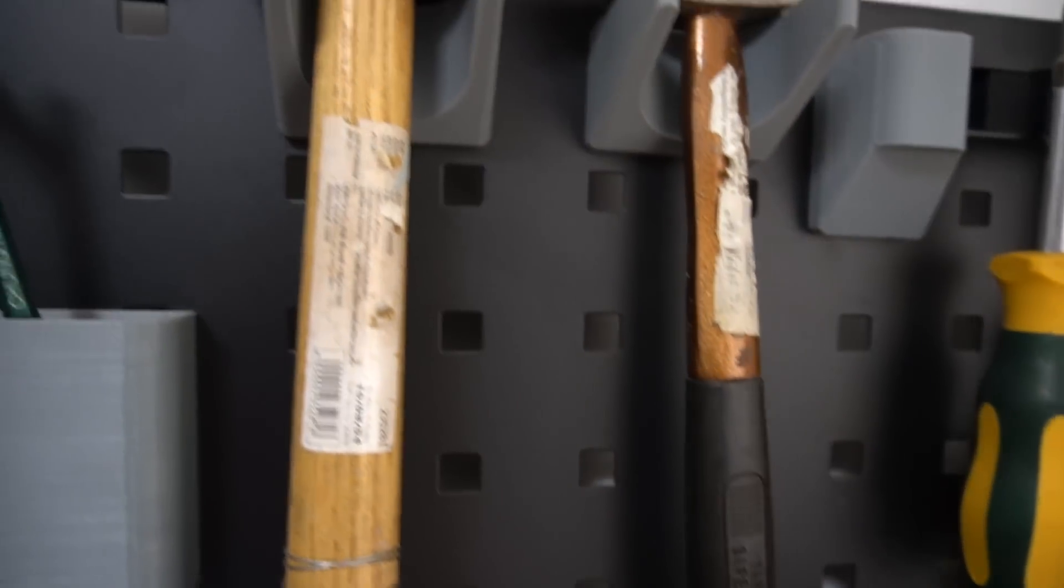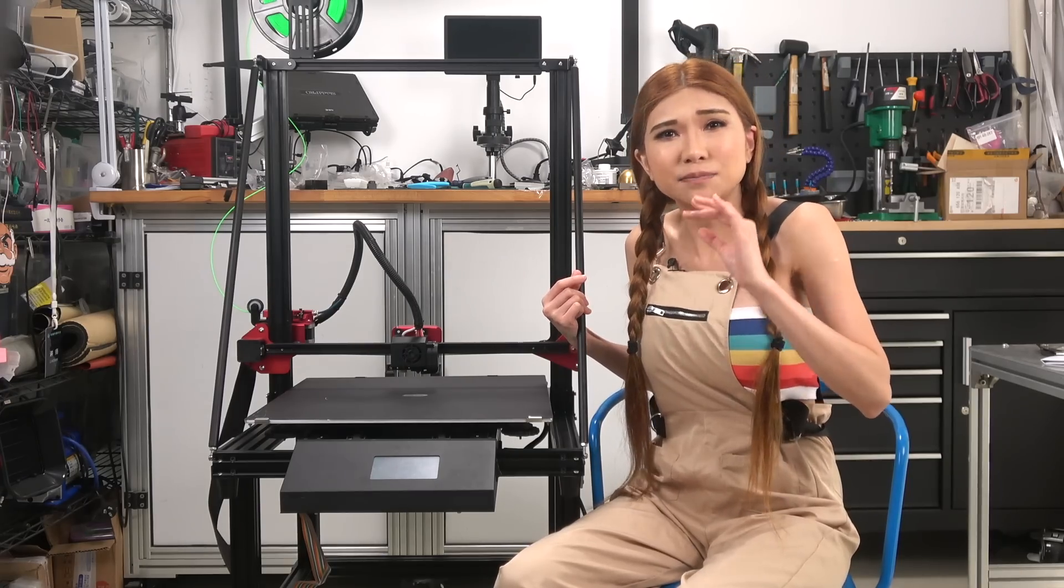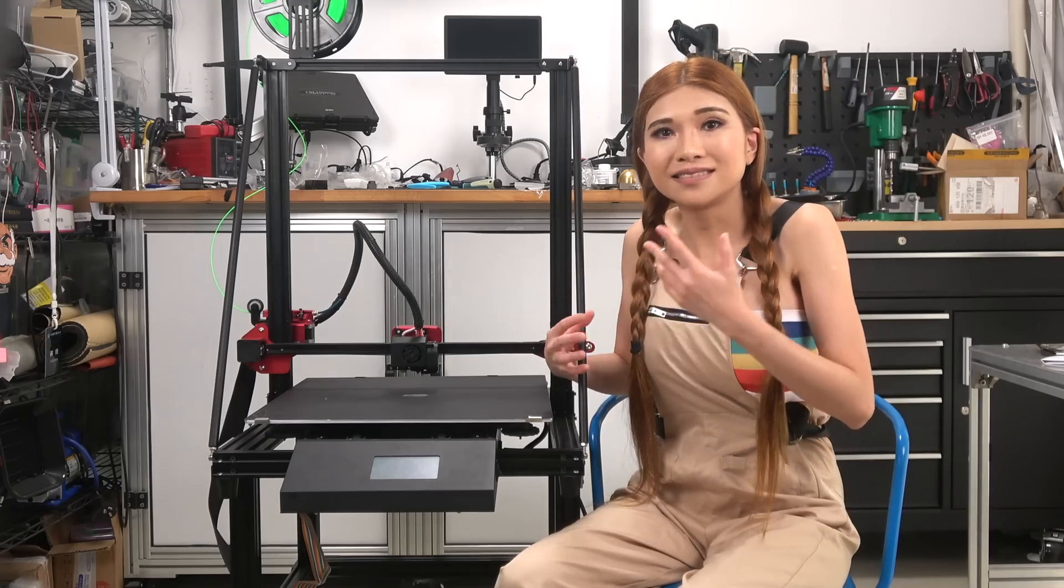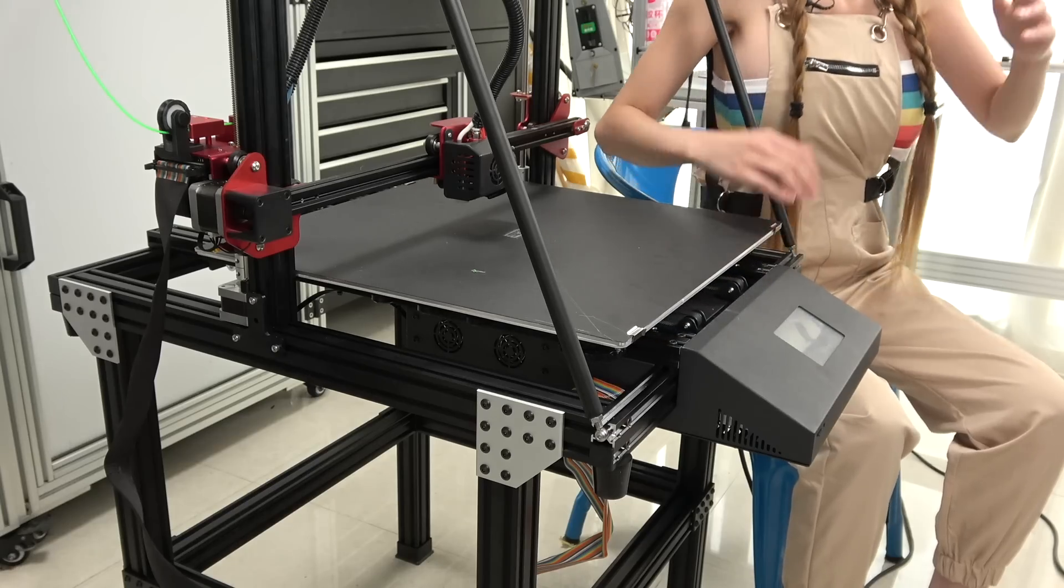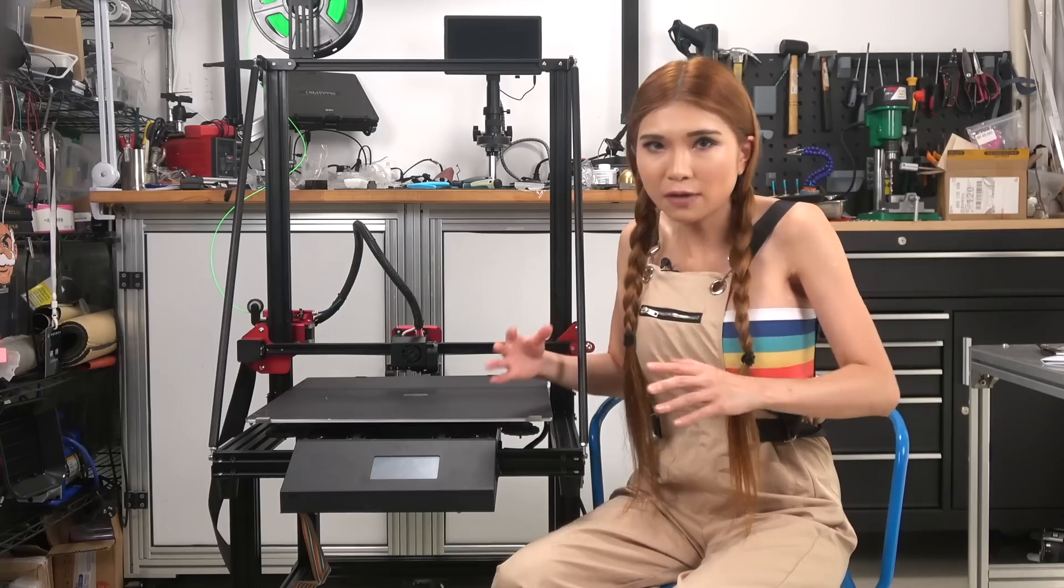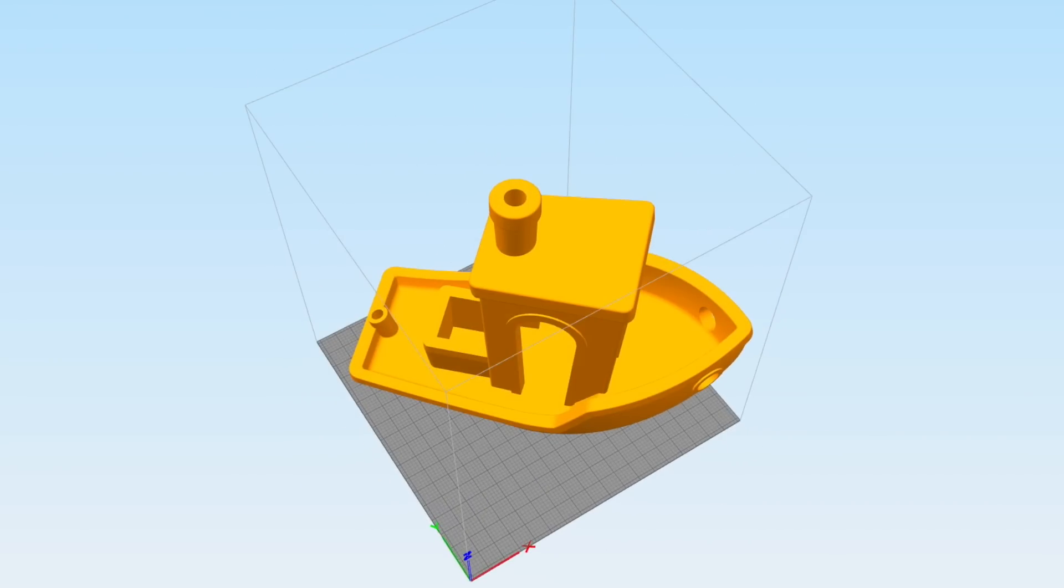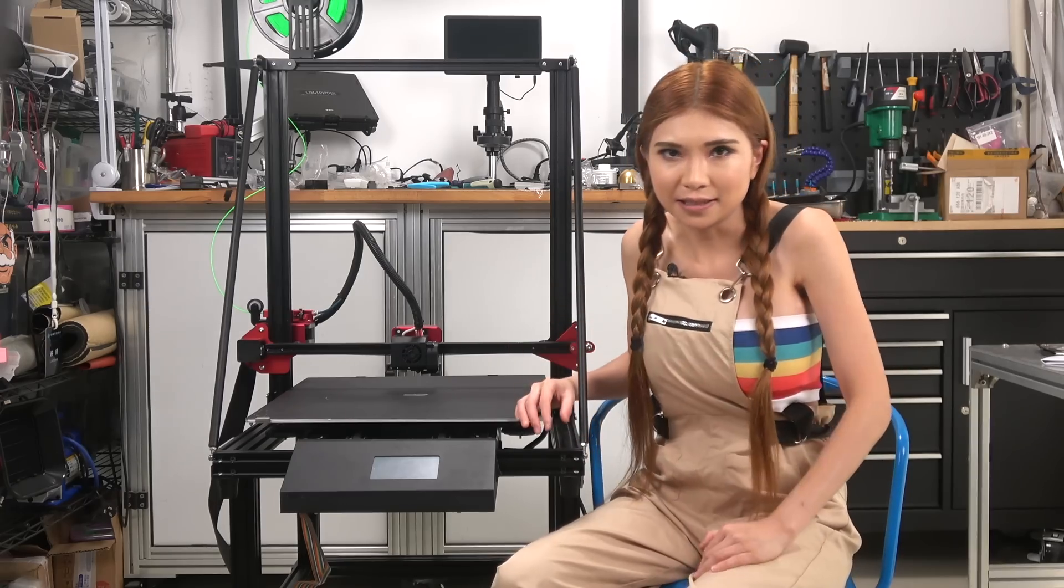The other problem with large 3D printers is they print at the same speed as small 3D printers. Often slower because some have to move a big bed back and forth. Which means actually using their full capacity is not very practical. Printing this test model of a boat would take 10 days with the printer running day and night, that's just silly.